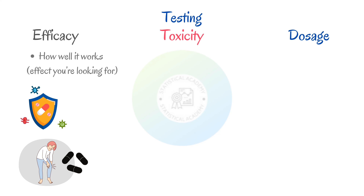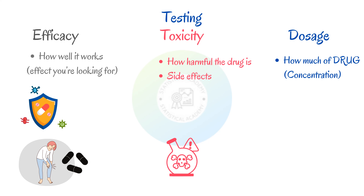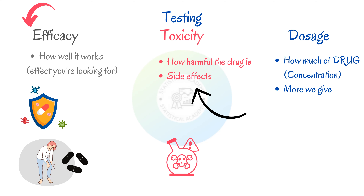A drug's toxicity meanwhile is how harmful it is — for example, does it damage our cells or have any side effects. Dosage refers to how much of the drug, or what concentration of the drug, should be given. Generally speaking, the more drug we give, the more effective it is going to be, but it will also cause more side effects. So now that we know what we are looking for, we can look at the three main stages of drug testing.